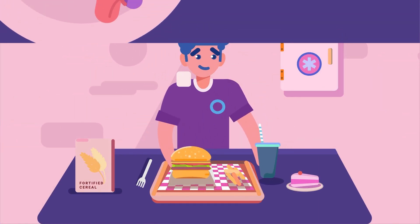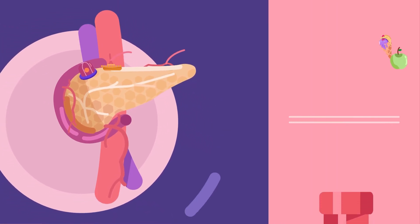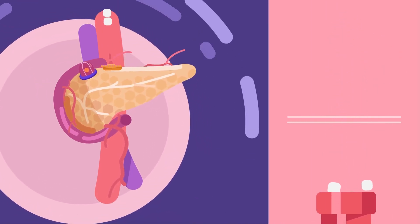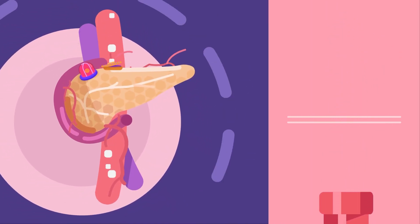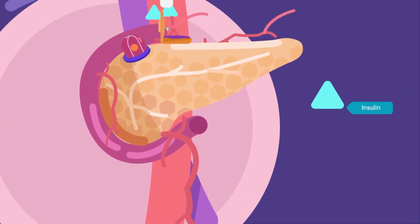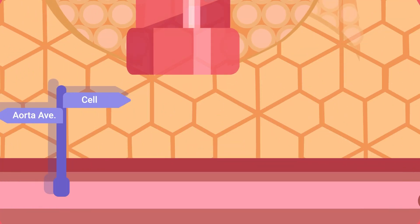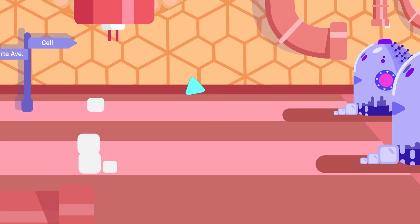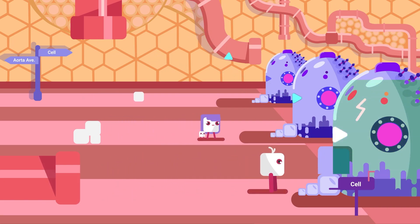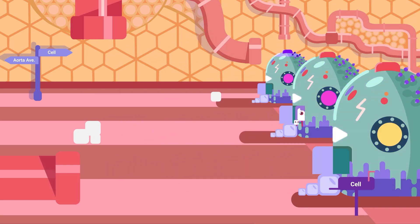Normally, the food we eat breaks down into small particles of sugar called glucose. Our pancreas detects high levels of glucose in the blood and produces insulin, which acts as a key for glucose to enter the cells of our organs and be converted into energy.